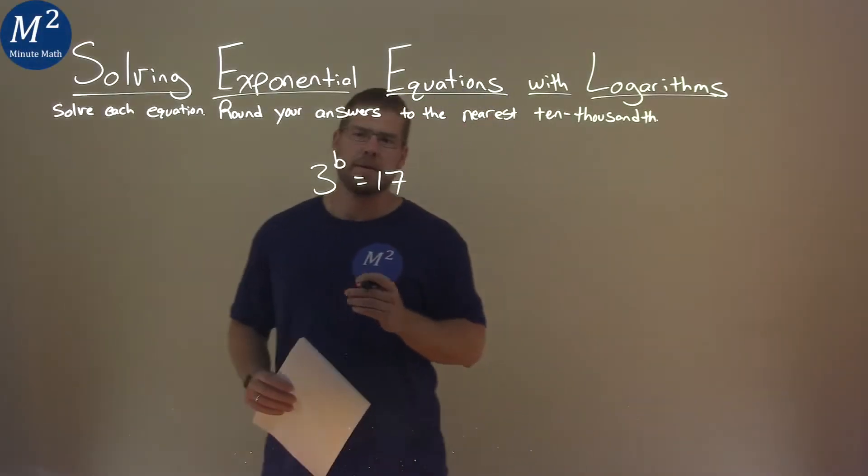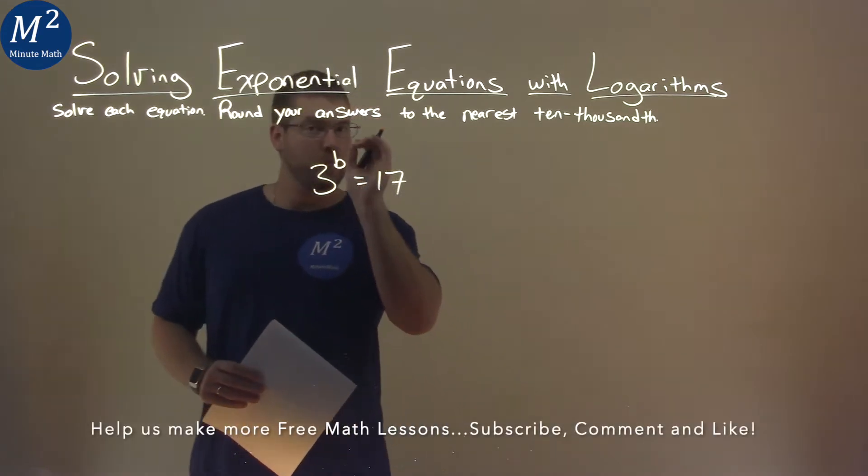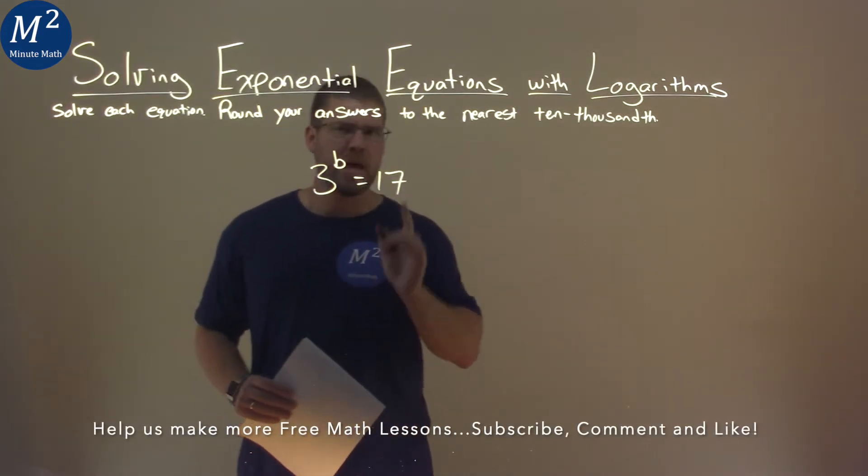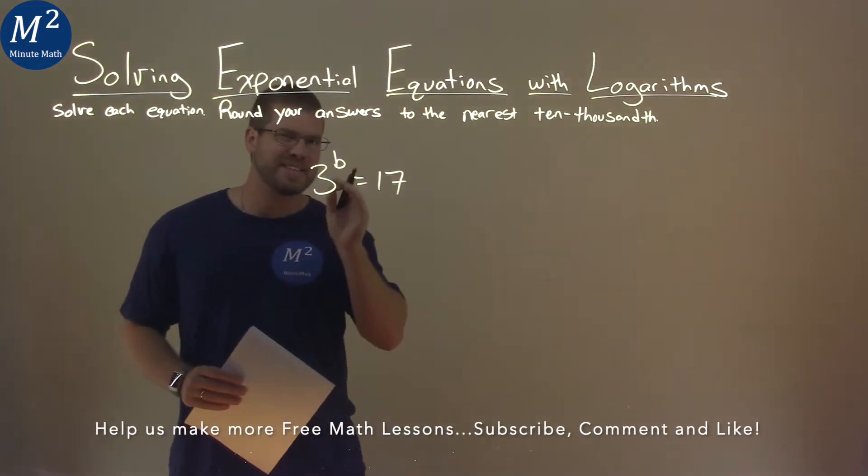We're given this problem right here. 3 to the power of b is equal to 17, and we need to solve this equation.